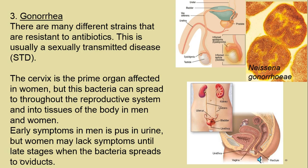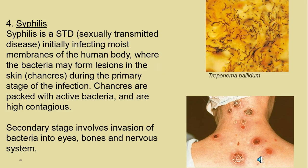Gonorrhea — we thought we had this mostly beat, but it has mutated into resistant strains. STI is really the more current term — sexually transmitted infections. The cervix in women is the main target, but once it's in the reproductive system it can move and go into the kidneys wherever it wants. Early symptoms in both men and women include pus, but women's symptoms tend to come later — unfortunately by the time symptoms arise, the oviducts may already be infected.